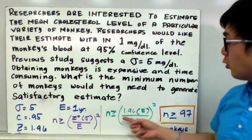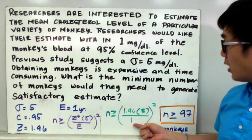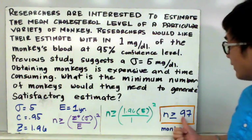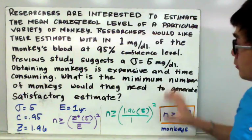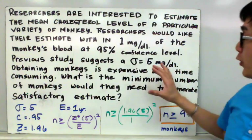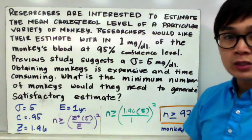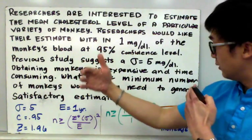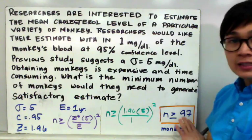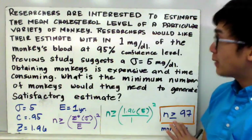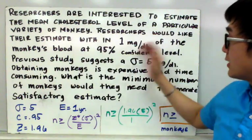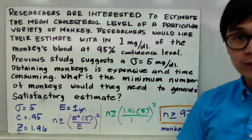all over E, which is 1. Square it and you'll get 97. So in this particular research, for you to be 95% confident that your population parameter will fall in your interval, you will need at least 97 monkeys to be able to make your research successful at 95% confidence level.